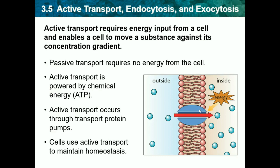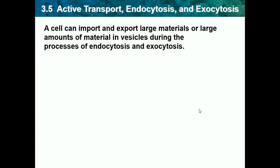The cost is that it uses energy. Cells use active transport to maintain homeostasis — when they can't regularly get the materials in and it's too hard, they have to use their energy to move it to where it needs to go. A cell can import and export large materials or large amounts of materials in vesicles during the process of endocytosis and exocytosis.